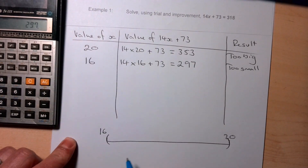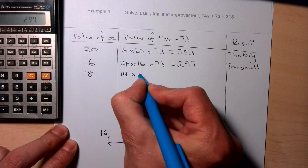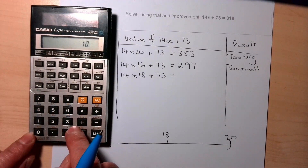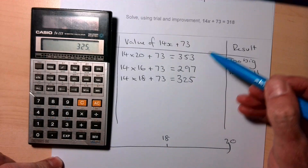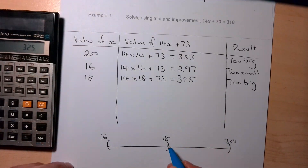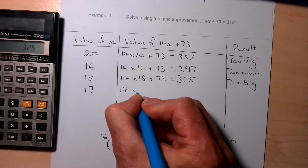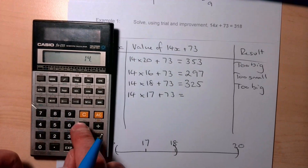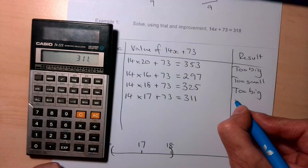Halfway between 16 and 20 is 18, so let's try x = 18: 14 × 18 + 73 = 325. Still a little too big. So 18 is too big, and we need to go smaller. Let's try x = 17: 14 × 17 + 73 = 311. Even closer, but now a little too small.